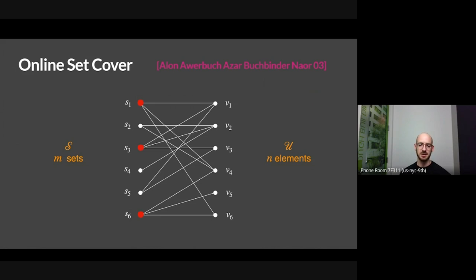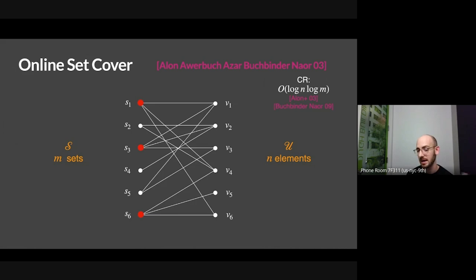So what can you do in this setting? It's not as easy as the offline problem. You can't quite get the log n approximation, but you can get close — you can get a double log: log n times log m, where n is the number of elements and m is the number of sets. This is from a beautiful paper by Alon et al., and it turns out this result is tight — you can't do better, at least for polynomial-time algorithms.